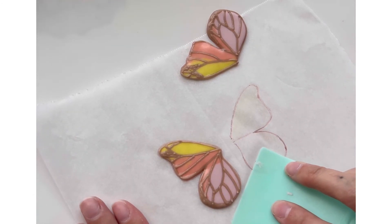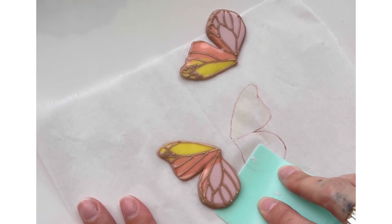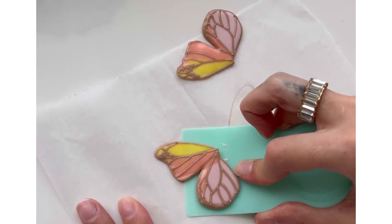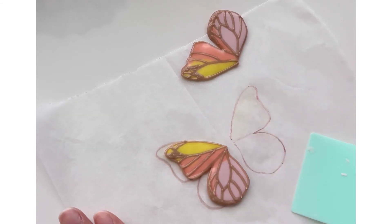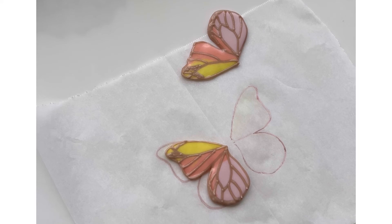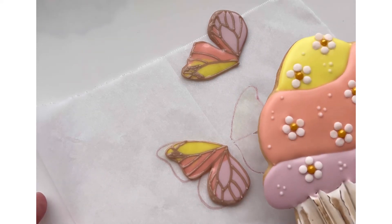Once your transfers are off, you can go ahead and place them on your cookie or cake, whatever design you're making. To see how I attached these wings to make it look like a butterfly in flight, check out my other tutorial on the 3D cupcake cookie with butterfly.